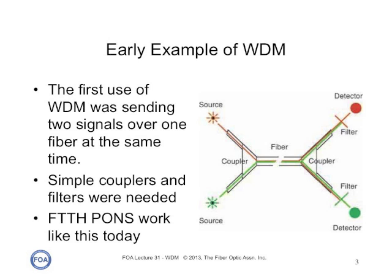The PON systems — passive optical networks for fiber to the home — work somewhat similar to this today, except they're sending fiber signals in opposite directions at different colors, but the same technique applies.